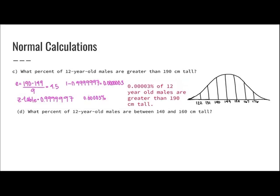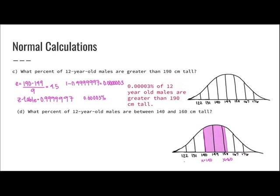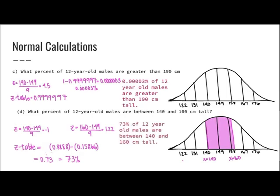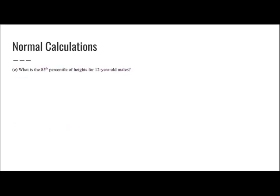What percent of 12-year-old males are between 140 and 160 centimeters tall? I graph both values on the normal distribution. 140 is one standard deviation below the mean, while 160 is slightly over one standard deviation above. I find Z-scores for both: for 1.22 I get 0.8888, and for negative 1 I get 0.15866. The difference gives 73%. So 73% of 12-year-old males are between 140 and 160 centimeters tall.